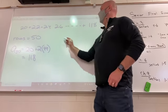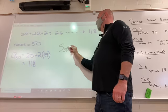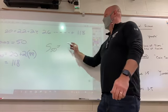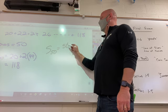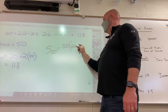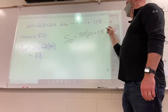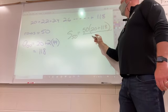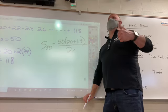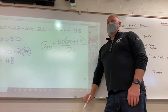So to find S sub 50, which would be the sum of the first 50 numbers of this sequence, all you do is take the number of rows, 50, times the first row, which is 20, plus the last row, which is 118, and you divide that by 2. And that will tell you the sum of all 50 numbers added together.